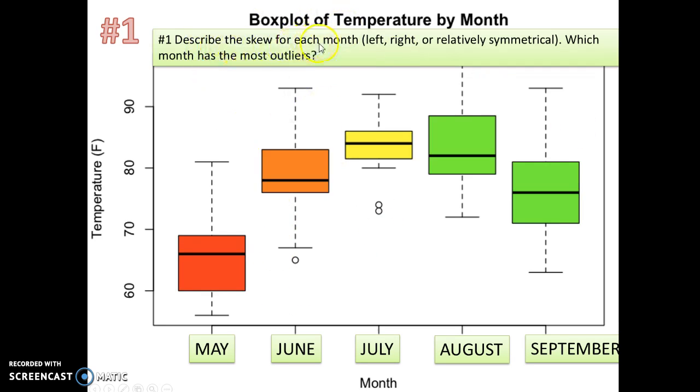All right, so our first slide is looking at temperature. Could you please describe the skew for each month, whether this is a right, left, or symmetrical? And then which month has the most outliers?